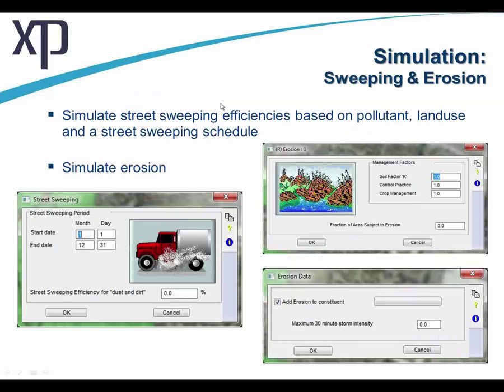We can also build into the model the regularity of street cleaning, because this can reduce the amount of pollutant build-up. We can literally sweep the pollution off the surface and put in the efficiency and regularity of that sweeping. If we run continual analysis over days, weeks, months, or even years, this would have a more stark effect.